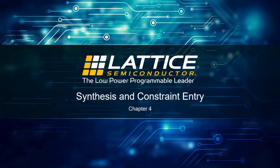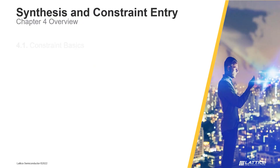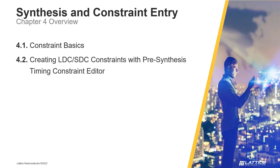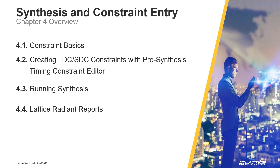Chapter 4: Synthesis and Constraint Entry. This chapter consists of five sections. Section 1, Constraint Basics, discusses the general flow for constraint creation with Radiant. Section 2 covers creating LDC and SDC constraints with the pre-synthesis timing constraint editor. Section 3, Running Synthesis, discusses Radiant's task detail view and process toolbar. Section 4 covers Lattice Radiant reports. Section 5, Using Netlist Analyzer, introduces Radiant's Netlist Analyzer and how it can be used to analyze a synthesized design netlist.